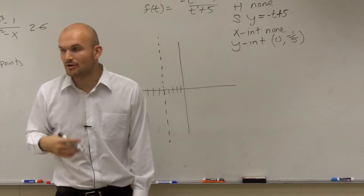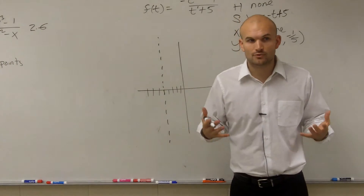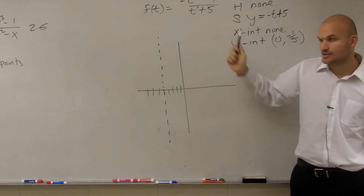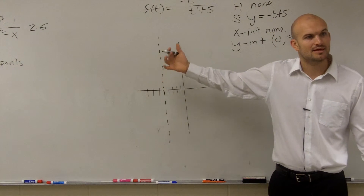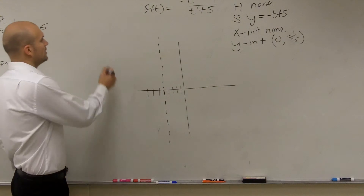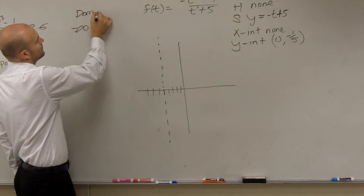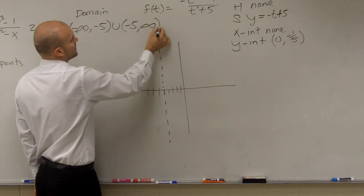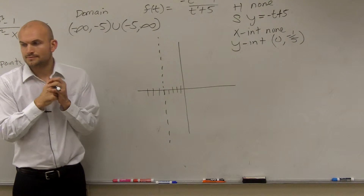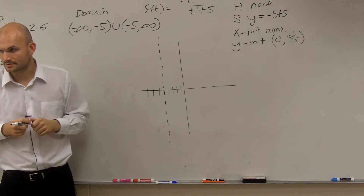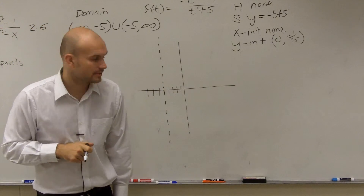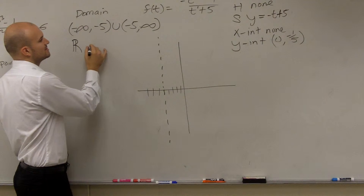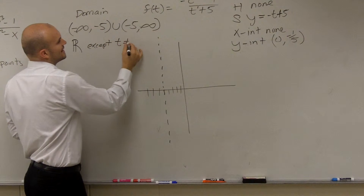When we're talking about domain, the domain of a rational function is all real numbers except the values that make your denominator zero. The only value that makes our denominator zero is negative five. So our domain is all real numbers except when t equals negative five. You can write this as negative infinity to negative five union negative five to infinity. Your vertical asymptote is not going to be a part of your domain. You could also say all real numbers except t cannot equal negative five.